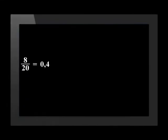Natasha talked briefly about probability being represented as a fraction, a decimal, and a percentage. Let's revise how to change between the three. Starting with the fraction 8 over 20: to change this to a decimal, we divide 8 by 20 and get 0.4. To change a fraction to a percentage, we first convert to a decimal, then multiply by 100. So 0.4 multiplied by 100 gives 40. This means that 8 over 20 is equal to 40%.